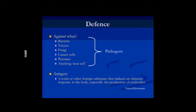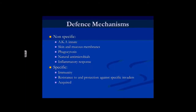Anything we're defending against is a pathogen — it causes pathology, so it causes disease or illness, and we don't want it in our bodies. We have a few different defence mechanisms: specific and non-specific. Specific is immunity, which we're going to come on to talk about. But we also have other things that are part of the immune system because they help defend us.